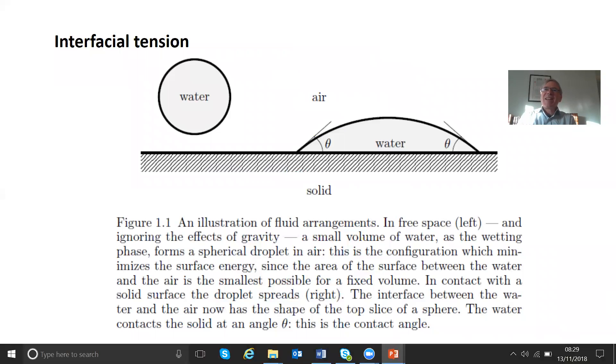So now, indeed, here is a diagram from the book. In fact, the very first diagram showing the concept of interfacial tension. So here is an example of water and air on a solid surface. As you know, in free space, the water would tend to form a spherical droplet. It is actually, that's what minimizes the surface area for a given volume. And because there is an energy associated with the interface, you want to minimize that interfacial area.